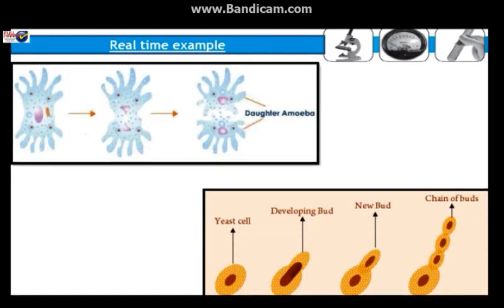Asexual reproduction is a type of reproduction where only one parent is involved for the production of a new individual. Sexual reproduction needs two parents — a male and a female. Each parent produces sex cells called gametes. Sexual reproduction involves two gametes from different parents.